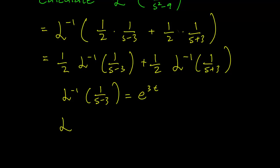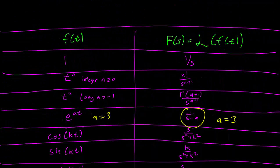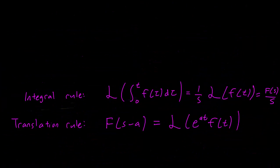Now let's look at the second term: the inverse Laplace transform of 1/(s plus 3). Looking at our table again, a similar entry will work except that we need a equals minus 3 this time, so we get s plus 3. Setting a equals minus 3 gives us e^(minus 3t).